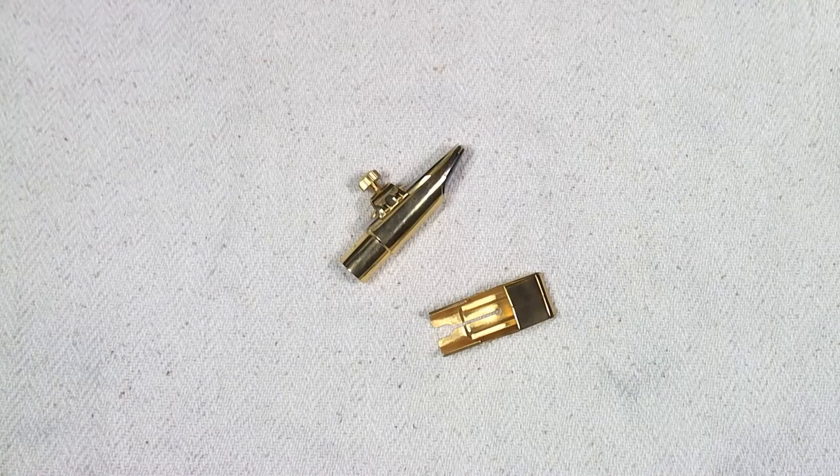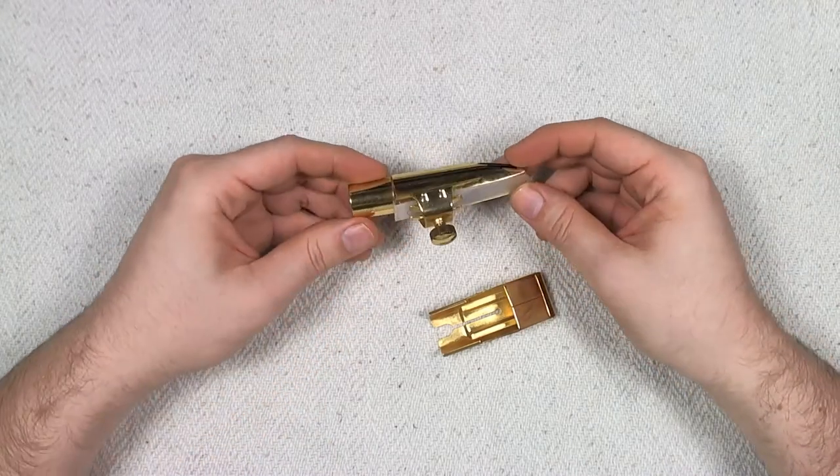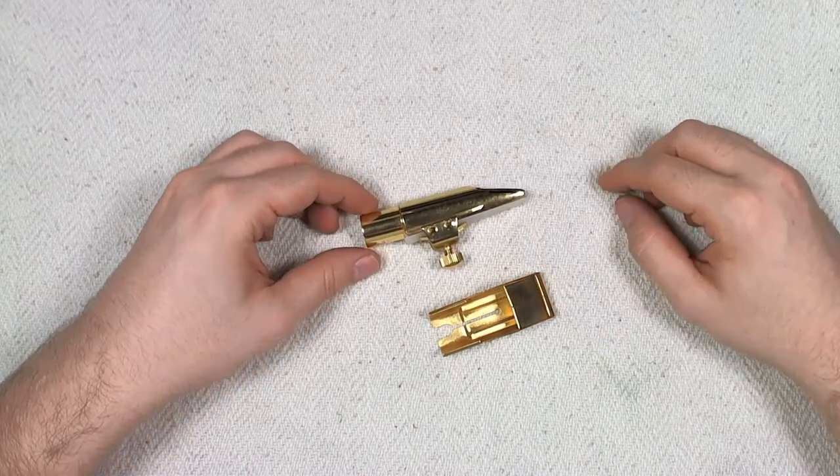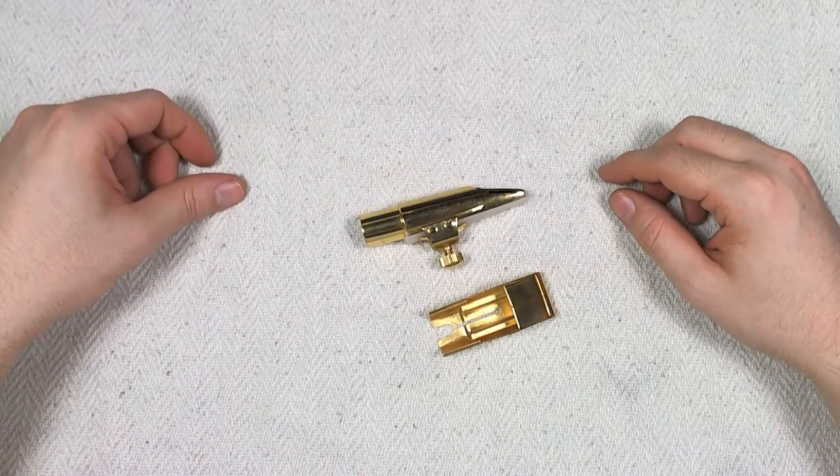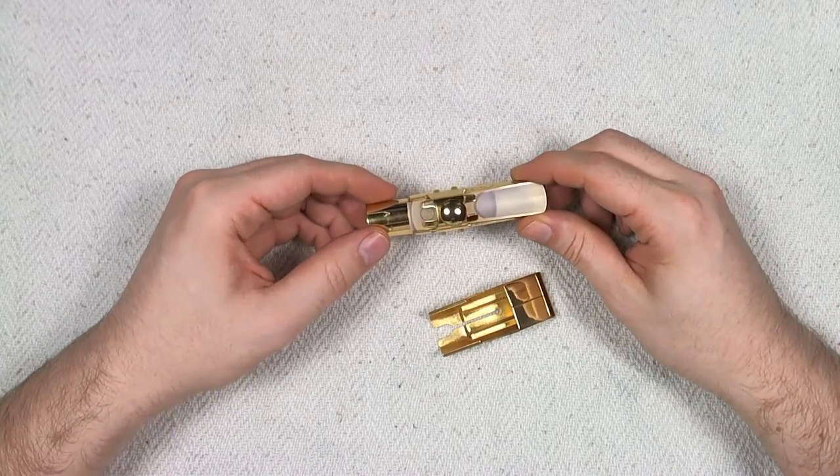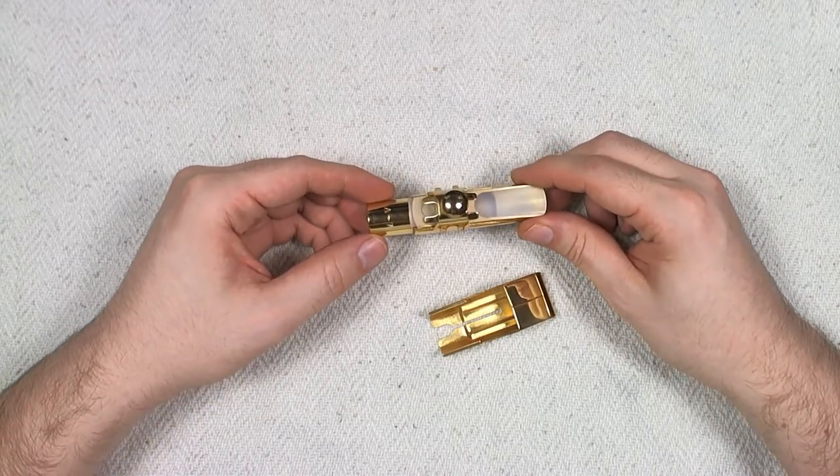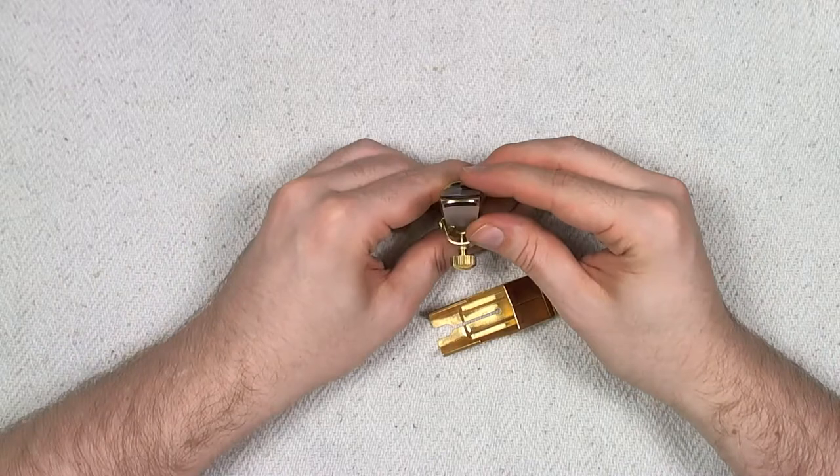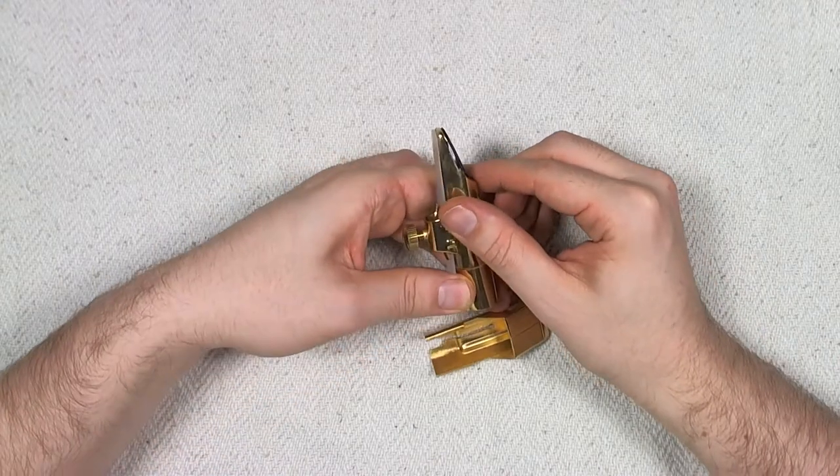Alright, this is a CNC milled Alto mouthpiece that comes from China. Quite good quality for how much it costs. This is $35. They do have different sizes, I believe about five to nine. So the tip opening on this one is pretty good. This is the seven.